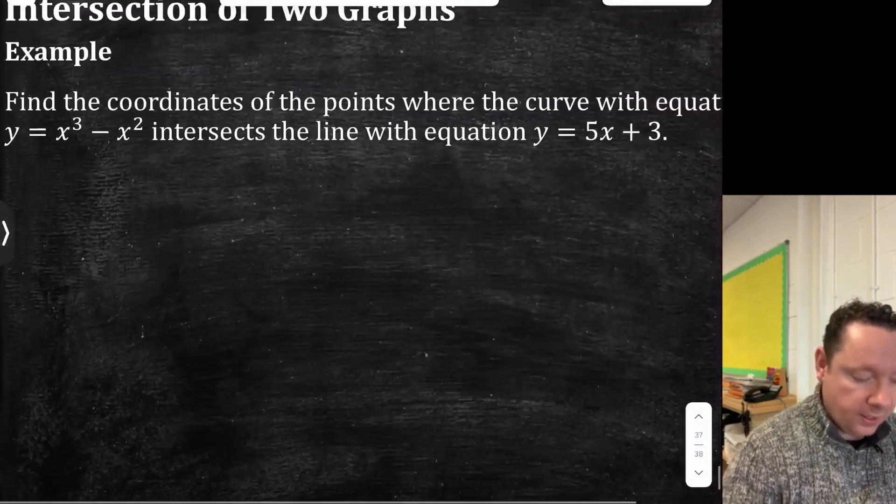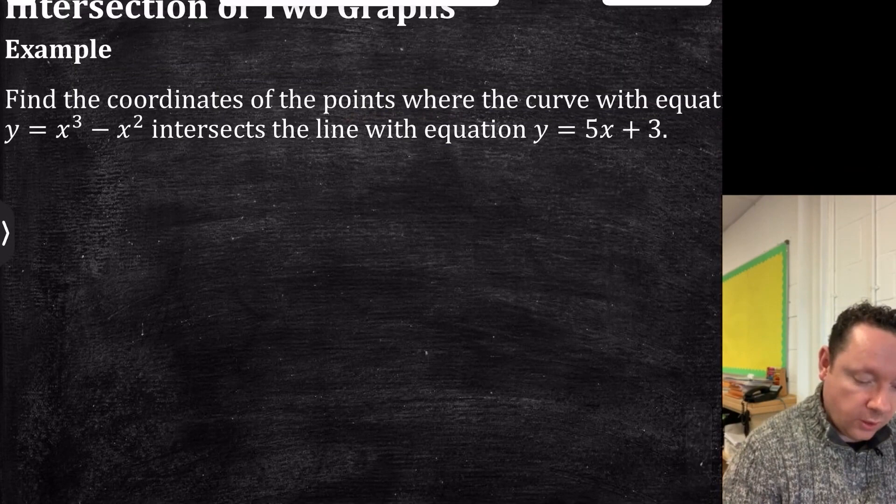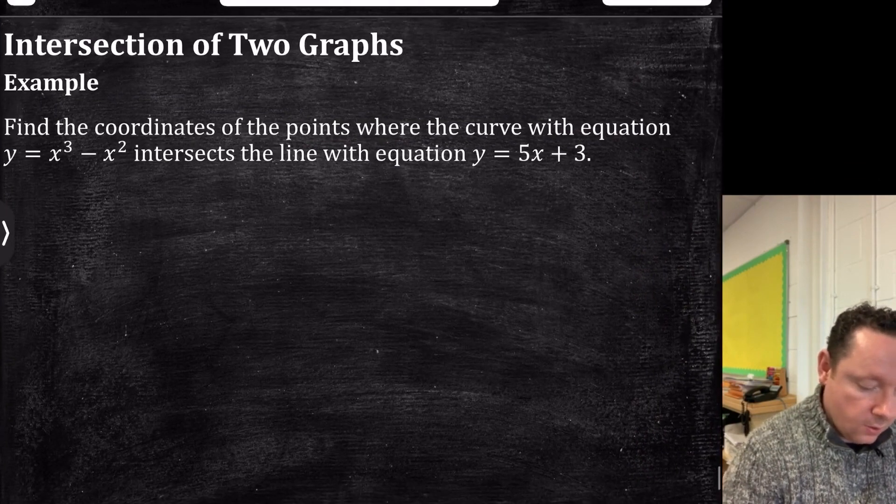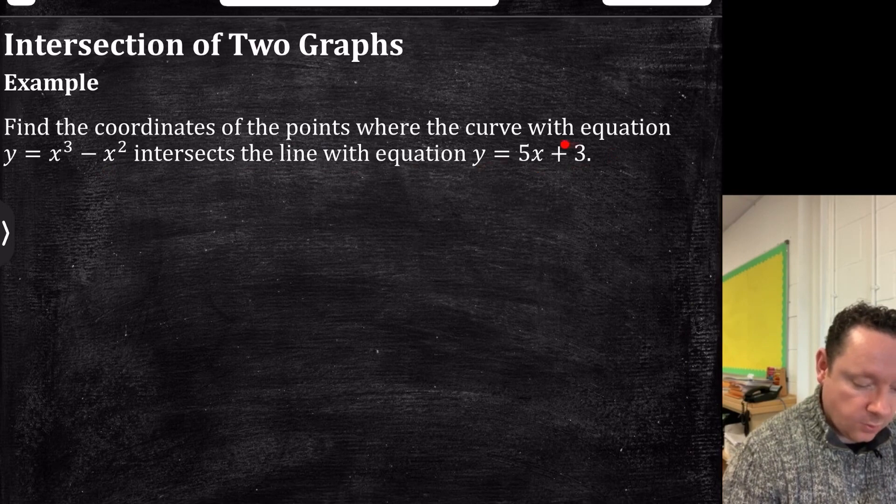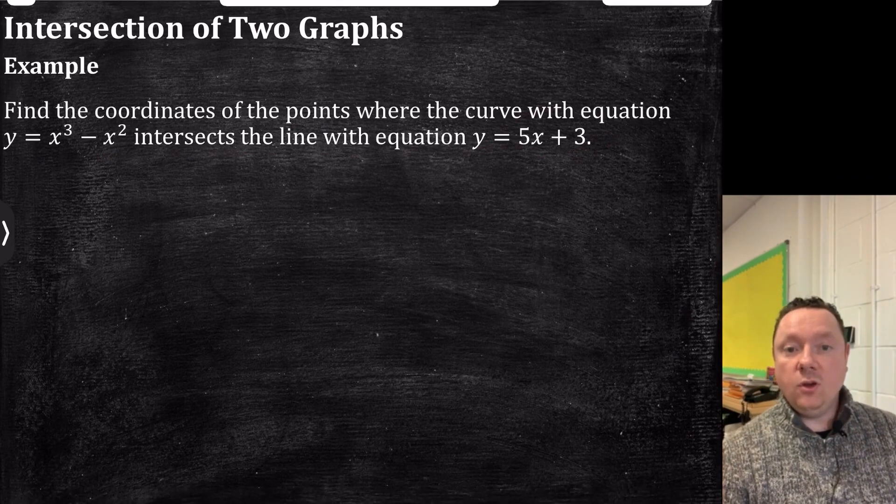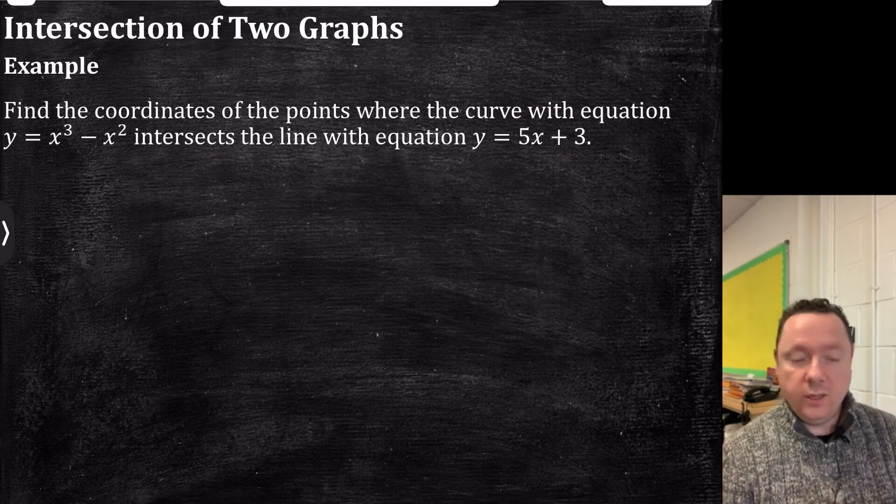So here's an example of finding points of intersection. Find the coordinates of the points where the curve y equals x cubed minus x squared intersects with the line y equals 5x plus 3. So if we find the intersection of two graphs or two equations, it's always simultaneous equations.